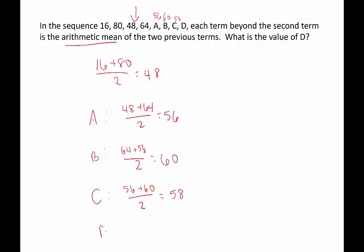Last but not least, the value of D. We're going to take the two previous terms, B and C—60 and 58—add them up, and divide by 2. That will give us 59. So we figure out here that the value of D is 59.